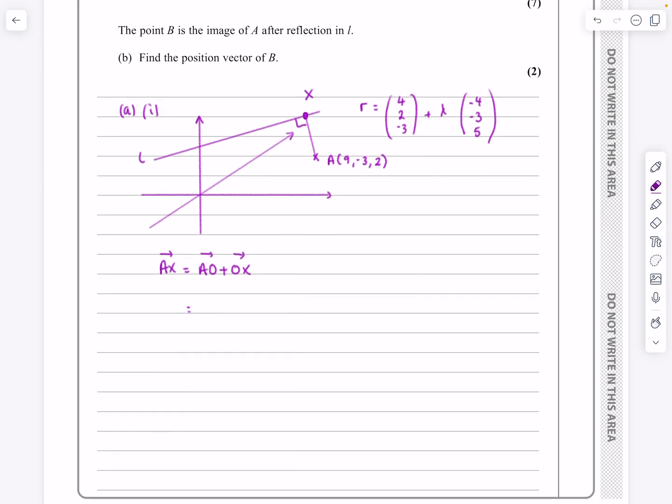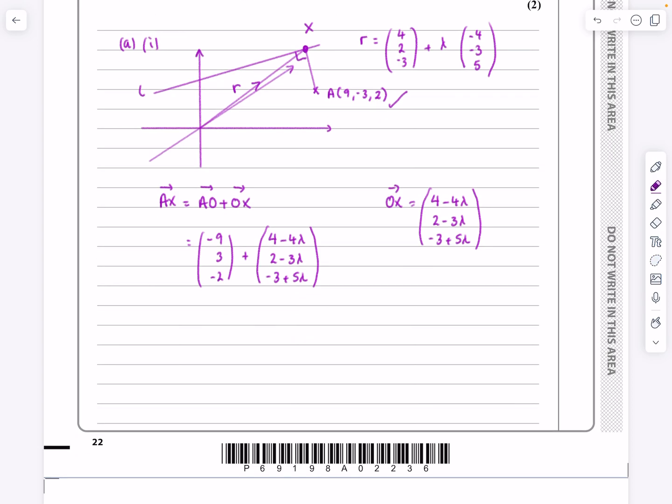So AO would be, be careful here, AO is the negative of this one. So it's going to be minus 9, 3, minus 2, plus what's OX? Well, OX in effect, OX is my R. So OX is just going to be combining these two together as a column, is going to be 4 minus 4 lambda, 2 minus 3 lambda, and minus 3 plus 5 lambda. That's going to give me the vector AX. Let's tidy that up. It's minus 5 minus 4 lambda, 5 minus 3 lambda, and minus 5 plus 5 lambda.